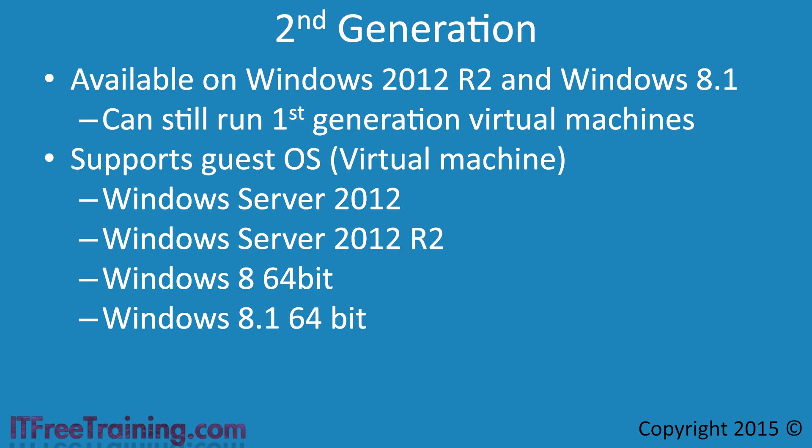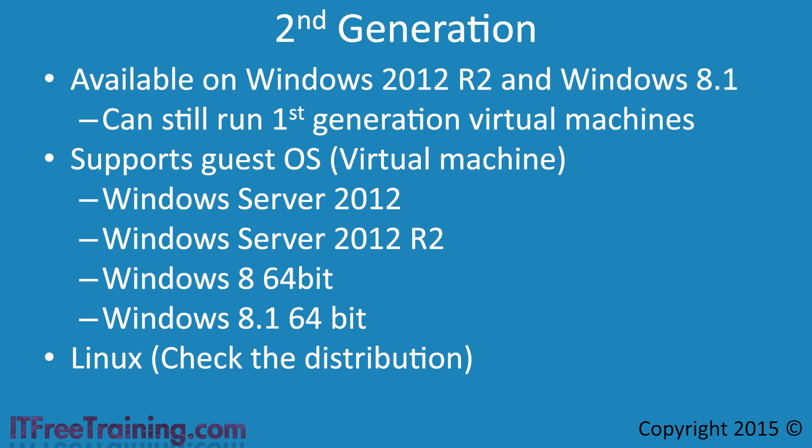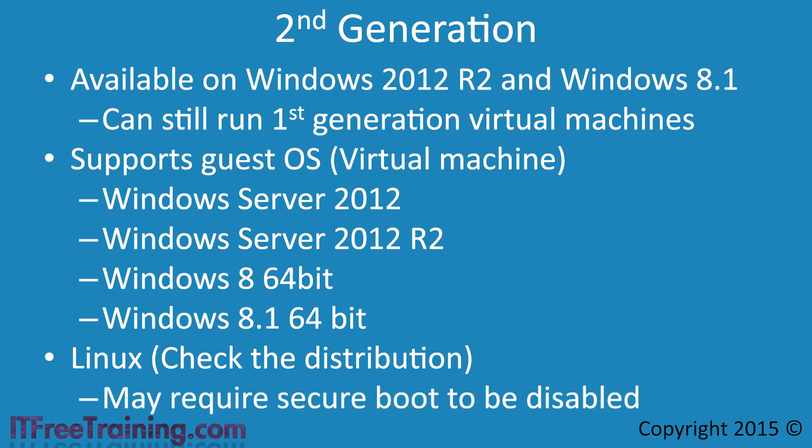When second generation was first released, Microsoft was still working on Linux support. If you plan to use Linux, check the distribution to see if it is supported and make sure you have applied all available Hyper-V updates from Windows Update. You may also need to disable Secure Boot. Secure Boot is a system that checks all software used in the boot process to ensure it is from a trusted manufacturer, so that an attacker cannot modify boot software without it being detected. Due to the open source nature of Linux, a distribution may not be recognized by Secure Boot and thus cannot be booted until Secure Boot is disabled.